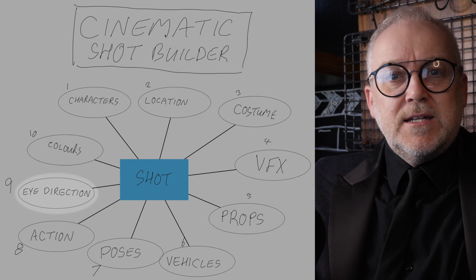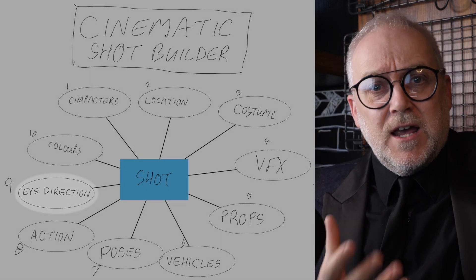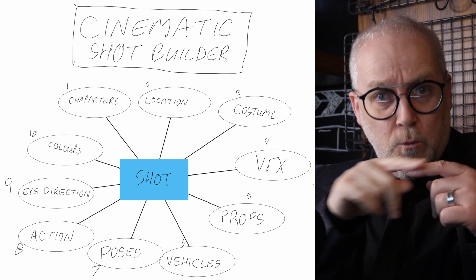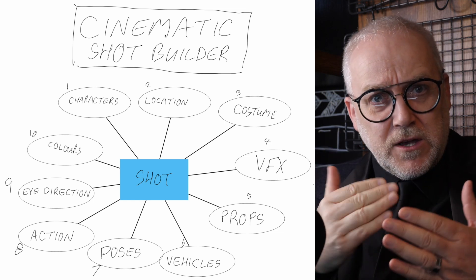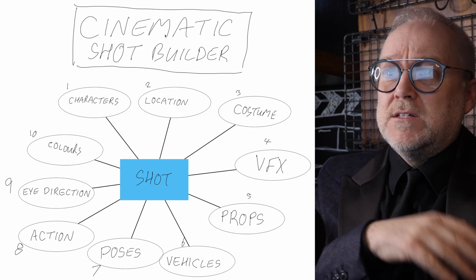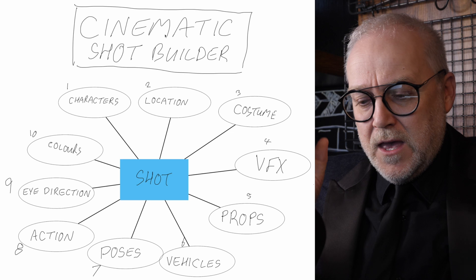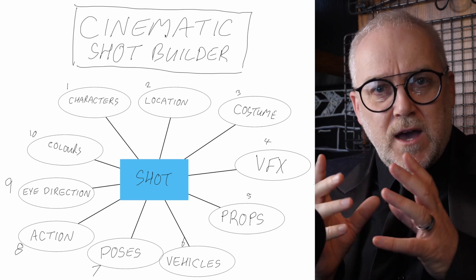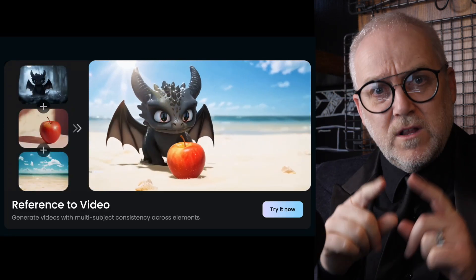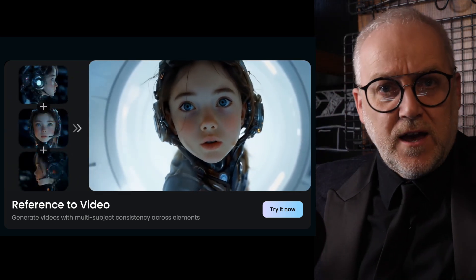Eye direction. It's absolutely critical that the characters are looking where they're supposed to be looking, and that has to be consistent shot to shot. Colors — the color scheme has to be consistent. That's just 10 things off the top of my head. This is why reference images to video are a really, really important innovation when it comes to generative AI video.